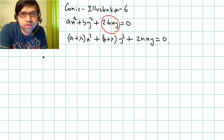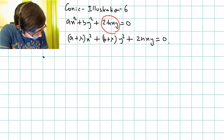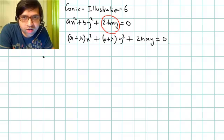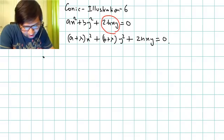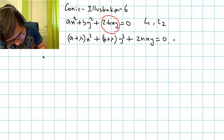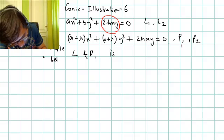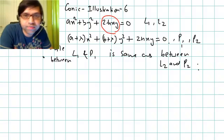What we are supposed to prove is that the angle between one line from the first pair and one line from the second pair is the same as the angle between the other lines of the respective pairs. If the two pairs are l1, l2 and p1, p2, we have to prove that the angle between l1 and p1 is the same as the angle between l2 and p2.